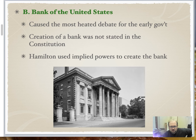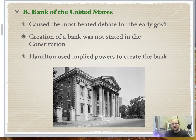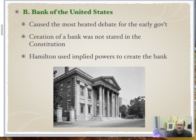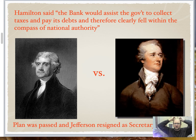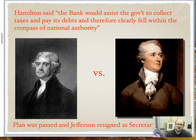The biggest debated item was the creation of the U.S. Bank. Hamilton created it to help deal with taxes, debt, payments, and to promote an economic manufacturing and industrial interest in America. The problem was that nowhere in the Constitution did it state a bank could be created. Hamilton argued the bank would assist in the government's collection of taxes and paying its debts, and therefore clearly fell within the compass of national authority. Jefferson was furious and eventually resigned over these issues.